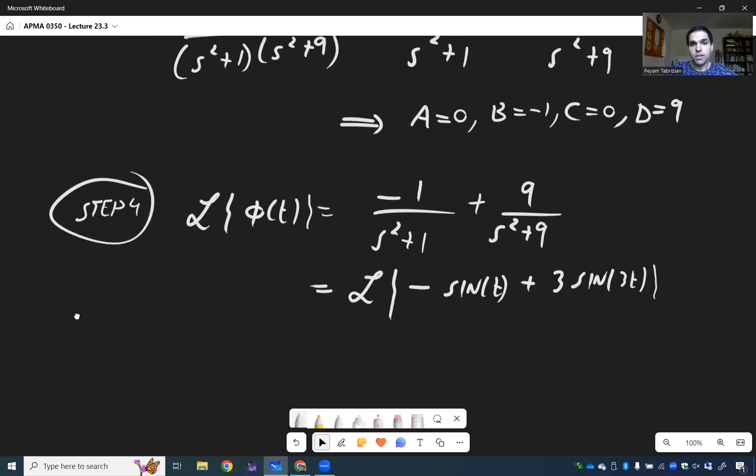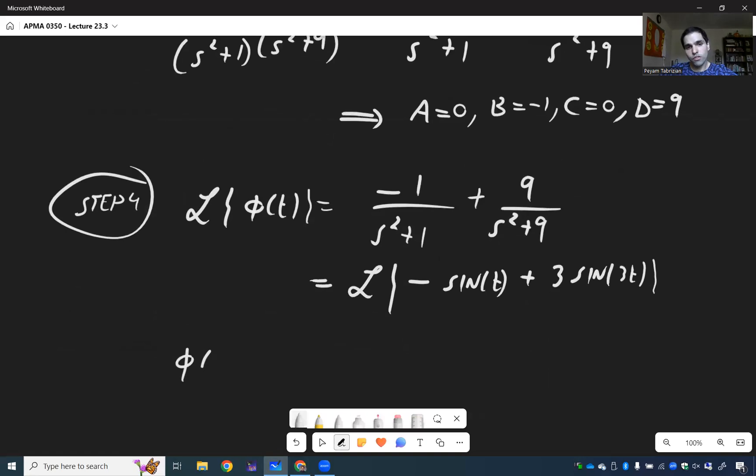And therefore, you have a solution. φ(t) = -sin(t) + 3sin(3t).